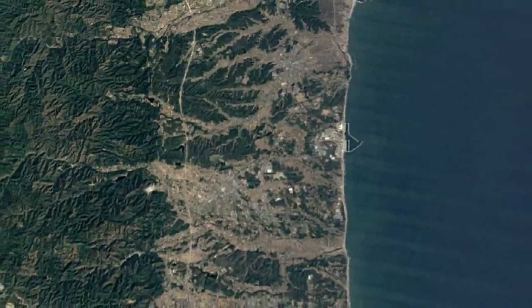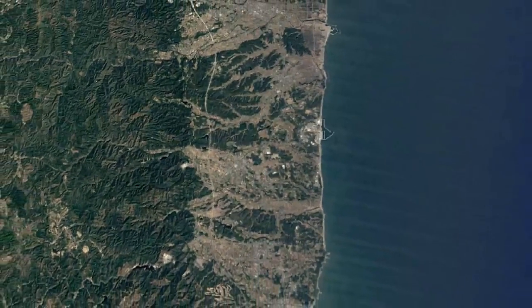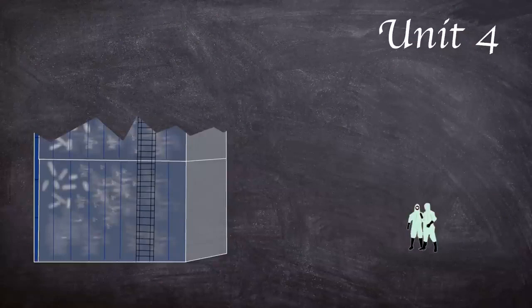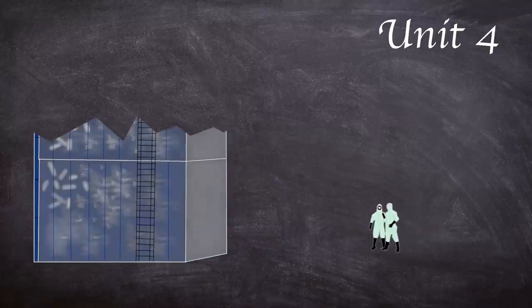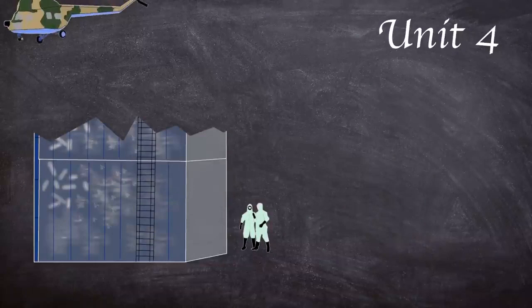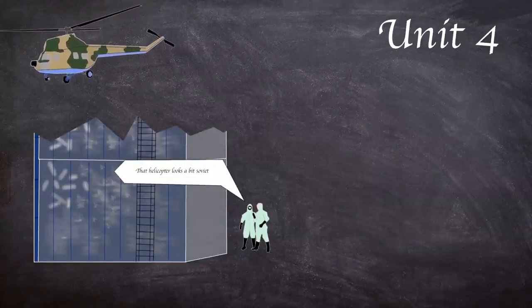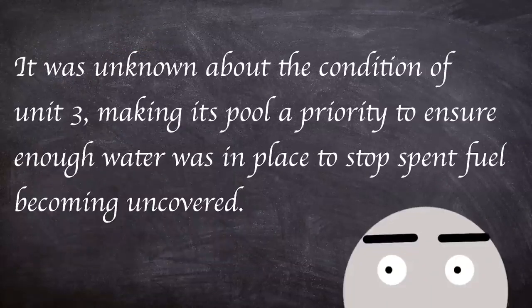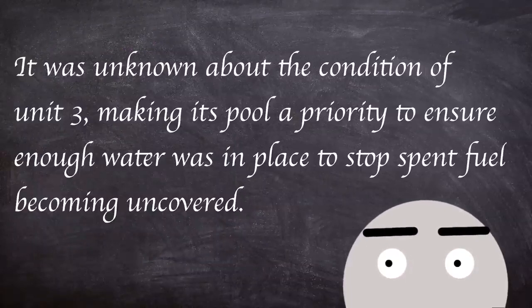An order was issued by the government authorities at 11 am requiring all residents within a 30 kilometer radius of the power plant to take shelter indoors. A team needed to enter the reactor building of unit 4 to investigate the status of the spent fuel pool. However upon entry they recorded radiation levels of a thousand millisieverts an hour. After an aerial survey on the 16th water levels were confirmed in unit 4's pool however it was unknown about the condition of unit 3 making its pool a priority to ensure enough water was in place to stop the spent fuel from becoming uncovered.